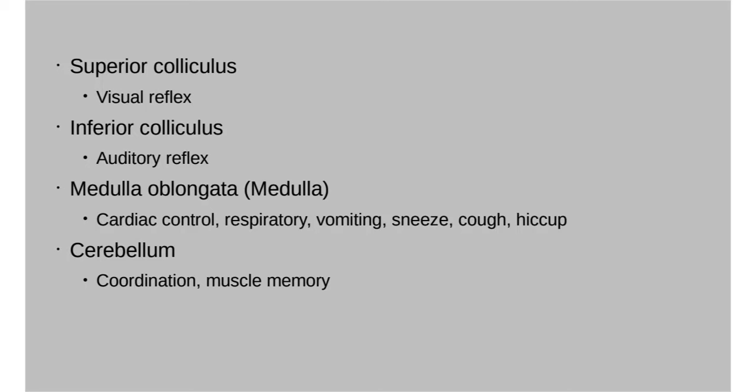The superior colliculus is your visual reflex. If you're walking past a park and out of the corner of your eye you see a baseball flying at you and instinctually jump out of the way, that's your superior colliculus. The inferior colliculus is your auditory reflex — if you step into the street and a car horn suddenly honks and you jump back, that's your inferior colliculus at work.